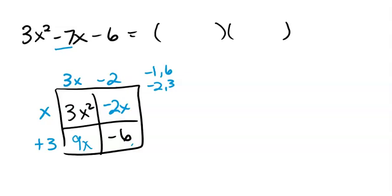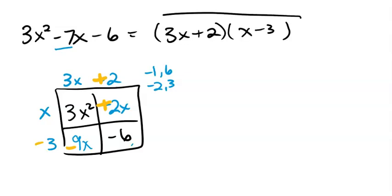So the way I'm going to make that work is I'm going to see about swapping these signs. I'm going to make that a positive 2 and this a negative 3, which makes it negative 9x and positive 2x. Now it's going to add to give me the negative 7, like I was wanting. So that's how that one works. I have 3x plus 2 for my first binomial and x minus 3 for my second binomial.